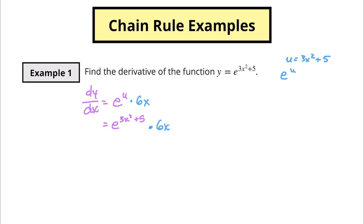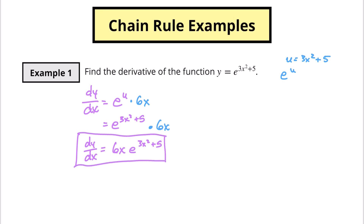My personal preference is to put the 6x in front — I think that looks a little nicer. So the final answer is 6x times e to the 3x squared plus 5. That is dy/dx, the derivative of our first example.